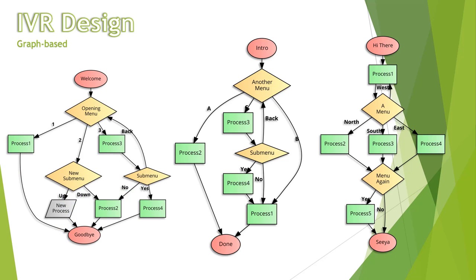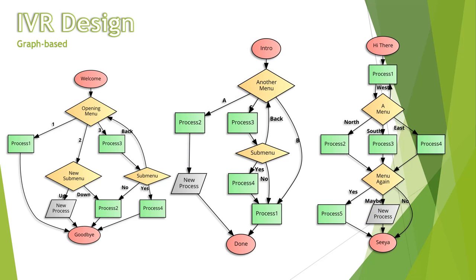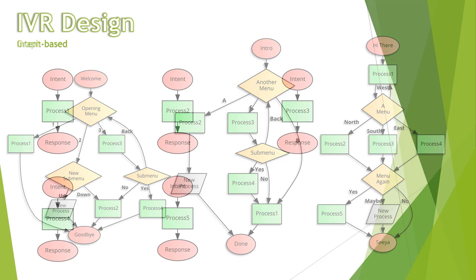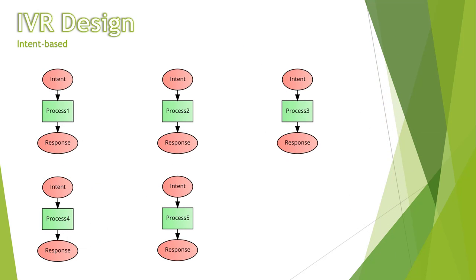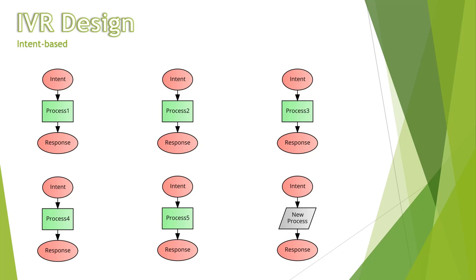Or worse, if the functionality calls for adjustments throughout the system. Intent-based designs, on the other hand, at least in general, allow for new functionality independent of the rest of the application. For an example of such an addition, flip back to our introduction to the Tacobot, where we quickly augment our bot in a way that could be difficult for graph-based designs.